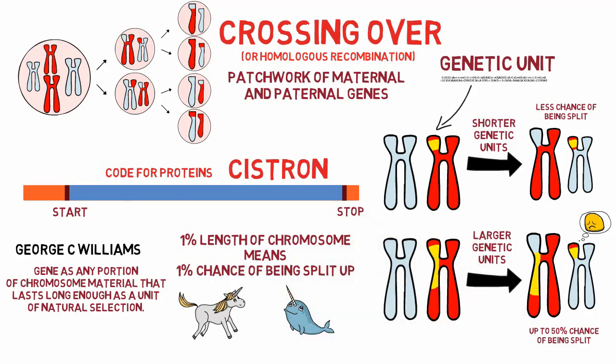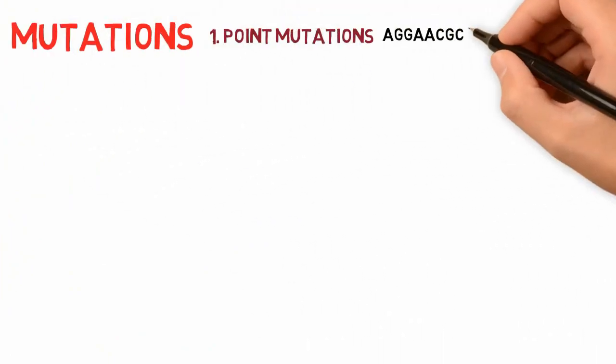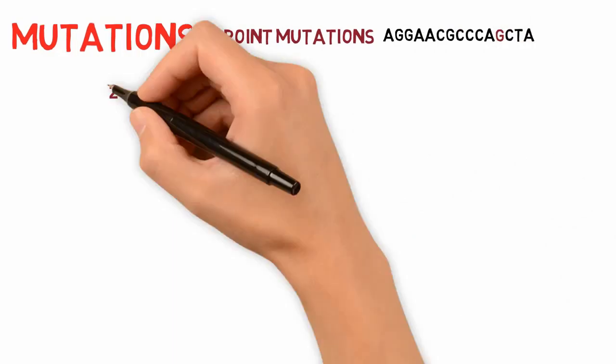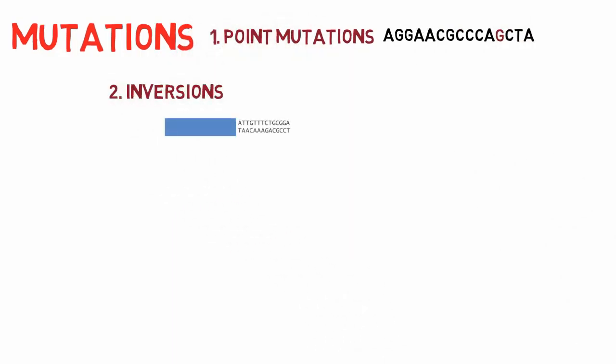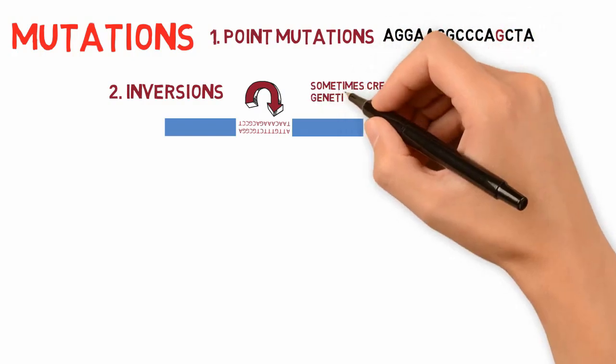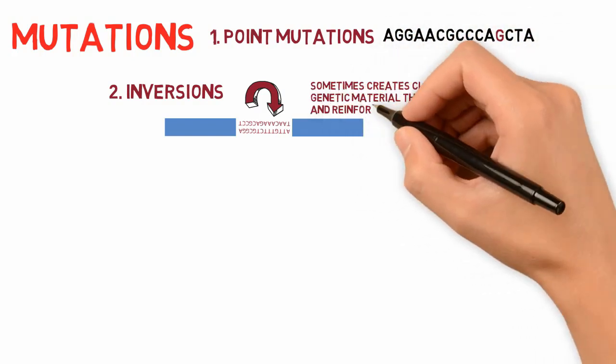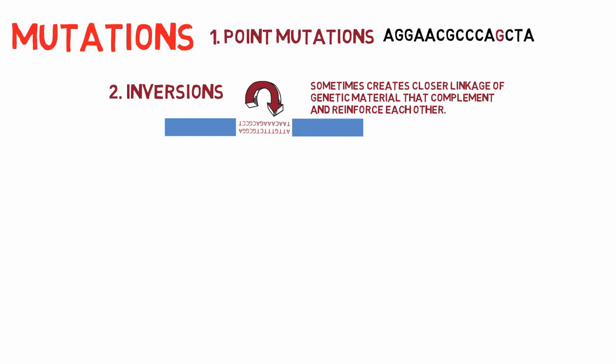Other than crossing over, a new genetic unit can also be formed through mutations. Point mutations are errors changing one code letter in the sequence. Mutations can also be inversions, where pieces of chromosomes detach and reattach in the inverted position. Although usually devastating, sometimes inversions can be beneficial by bringing a closer linkage of genetic materials that complement and reinforce each other. Natural selection would then favor new genetic units that create beneficial effects through considerable rearrangement and editing.